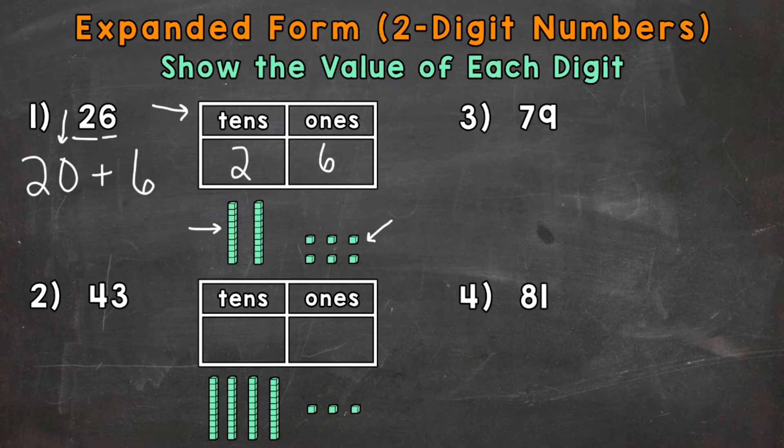And that 6 has a value of 6 because it's in the ones place. It represents six ones. And the 2 represents two tens, which is 20.